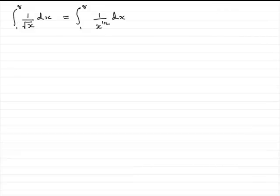And you should know this rule that if you have 1 over x to the power n, this is identical to x to the power minus n. So therefore, if n is a half, then this can be written as x to the power minus a half.